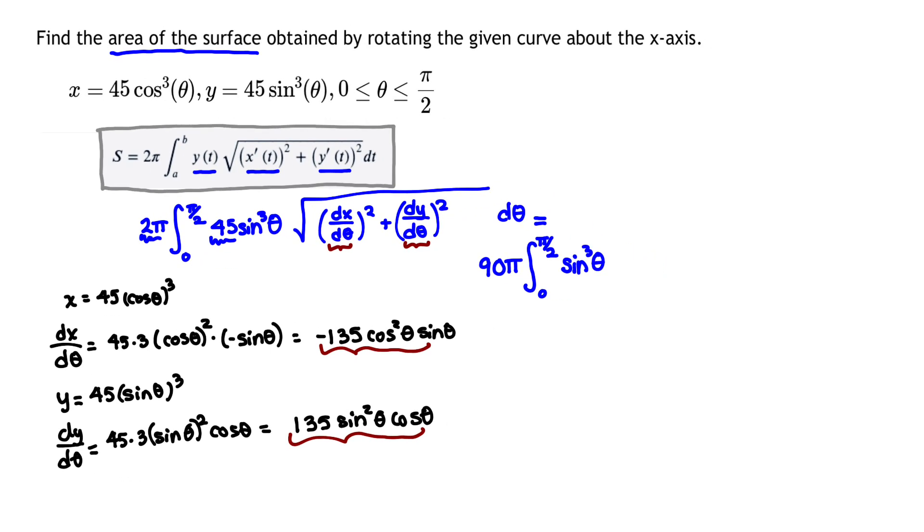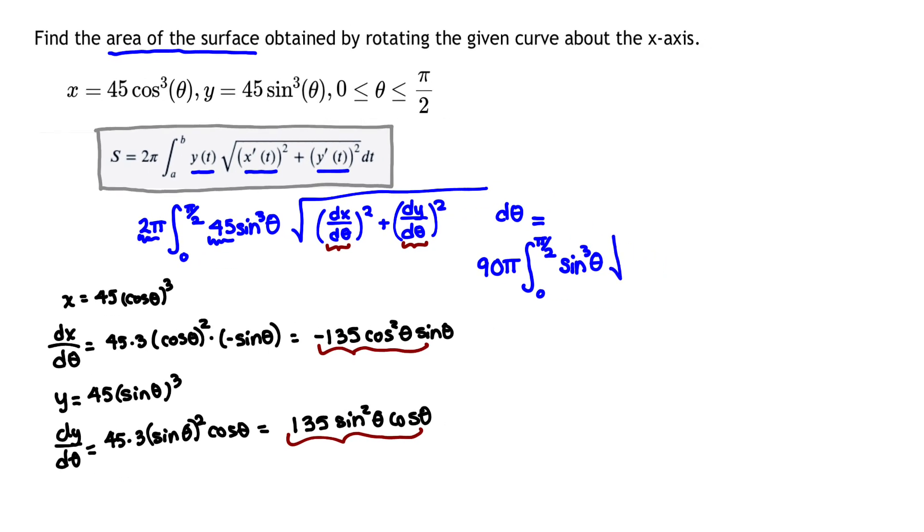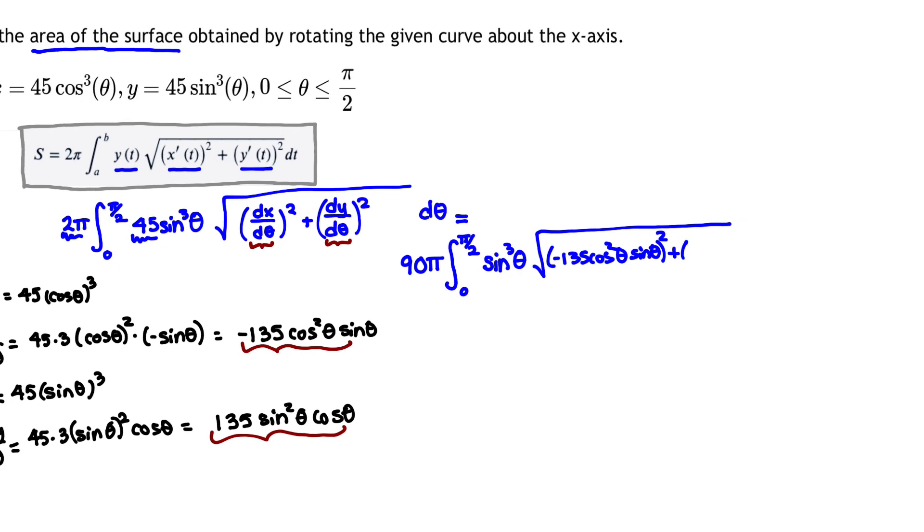And now I'm going to make that replacement. In place of dx/dθ, I'm going to put -135 cos²θ sin θ. In place of dy/dθ, I'm going to put 135 sin²θ cos θ squared, dθ. And now I'm going to simplify.